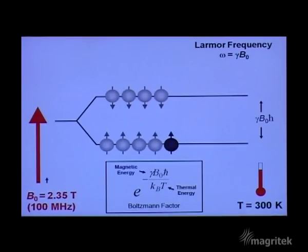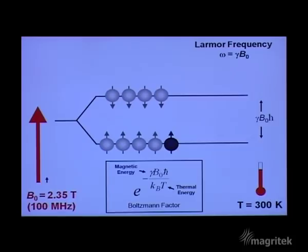However, that slight preponderance in the lower energy state shows up as a spin excess. It's the spin excess that's visible. All the remaining spins cancel out their angular momentum and magnetism and are invisible in nuclear magnetic resonance.